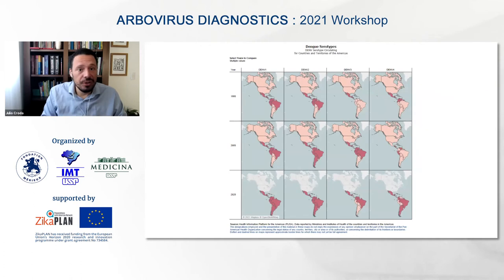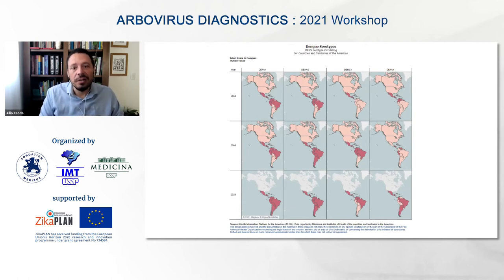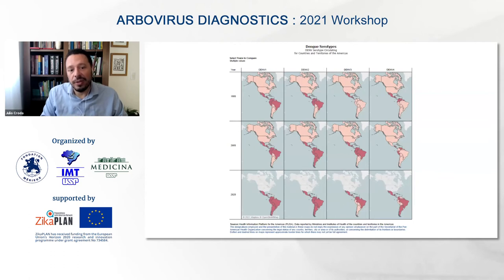Looking at the evolution of different dengue serotypes over time: in the 1990s, the majority in Brazil were dengue 1 and dengue 2. After that, dengue 3 increased, especially around 2005. By 2020, all serotypes were circulating, particularly in Brazil, which contributes the majority of cases.